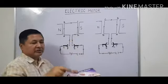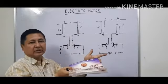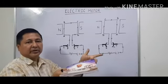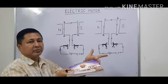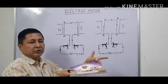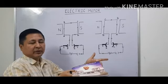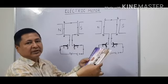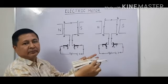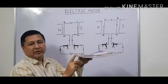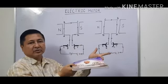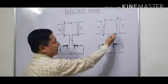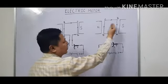Now if we see the current from C to D — the current flows from C to D, and the magnetic field is from North to South as pointed by the index finger. Applying Fleming's left-hand rule, the thumb shows that the force exerted on side CD is in the upward direction. So on side AB the force is downward, and on side CD the force is upward. The coil moves and takes a half turn — side AB moves down and side CD moves upward, so the coil shifts position.